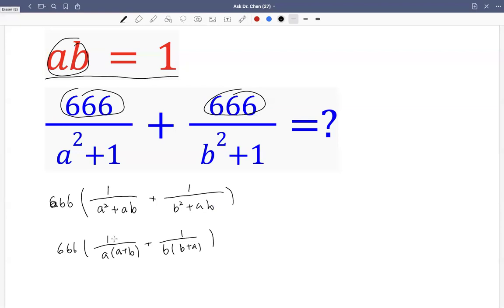Now we need a common denominator. So we multiply B over B, and we multiply A over A.